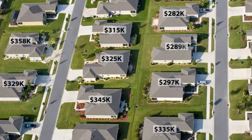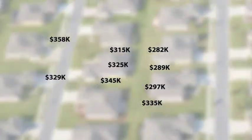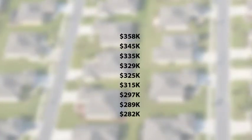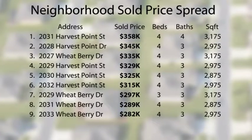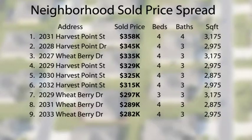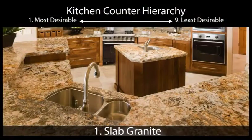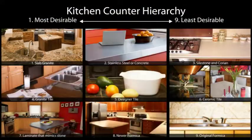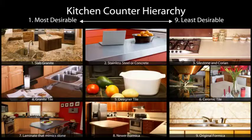Interior and exterior amenities are critical to pricing your home. In these videos, you will be introduced to the neighborhood spread and value hierarchies for every system in the home, such as flooring, countertops, cabinets, paint, windows, doors, trim, decks, garages, and bathrooms.